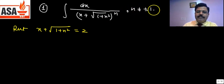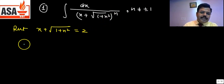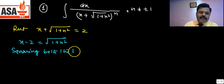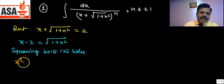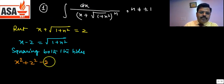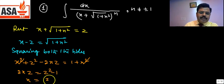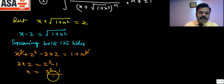We proceed with the substitution. Put x + √(1+x²) = z, so x - z = √(1+x²). Squaring both sides gives x² - 2xz + z² = 1 + x². The x² terms cancel out, giving us 2xz = z² - 1, therefore x = (z² - 1) / 2z.